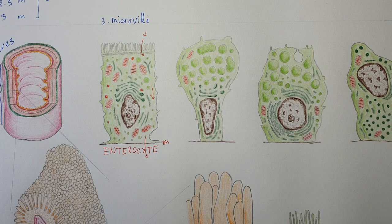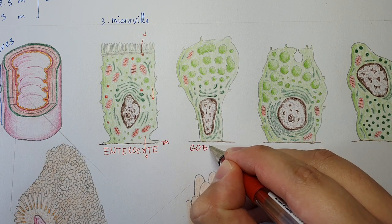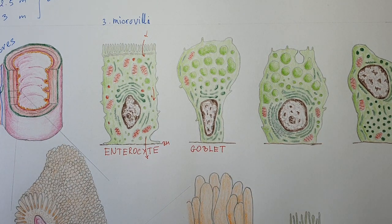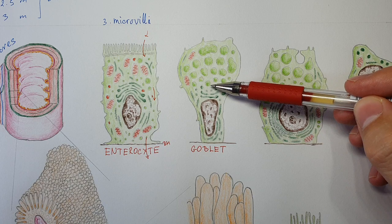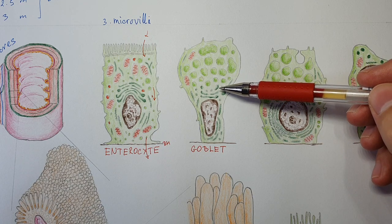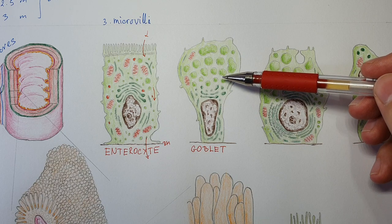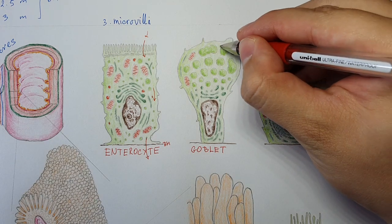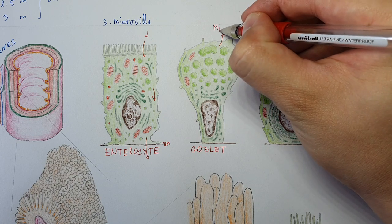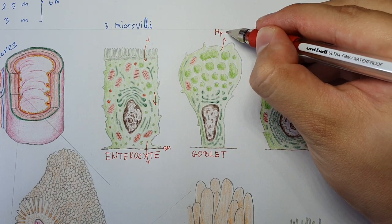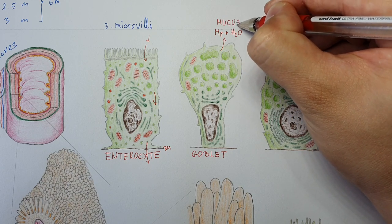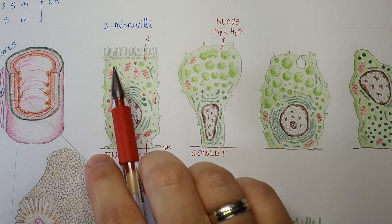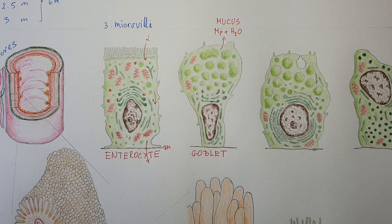The primary function of the enterocyte is nutrient absorption. The second important cell type is goblet cells. Goblet cells have a goblet shape with granules in their apical part. They produce gel-forming mucin peptides; when these peptides are released into the lumen and connect with water, they form mucus. This mucus is present on the surface of all these cells and has a very important protective function.